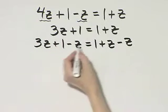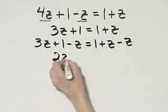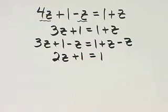On the left side, 3z minus z, that's 2z plus 1 is equal to 1.